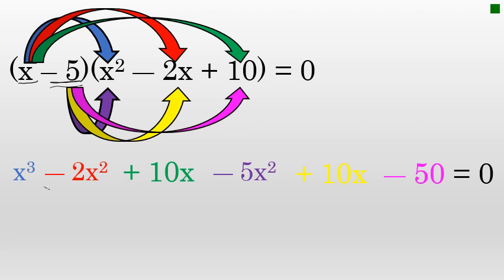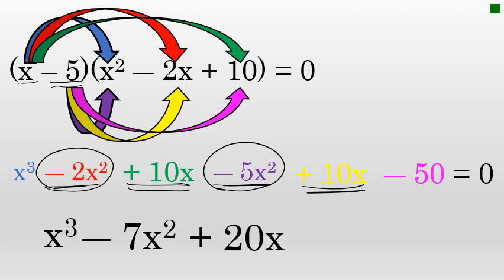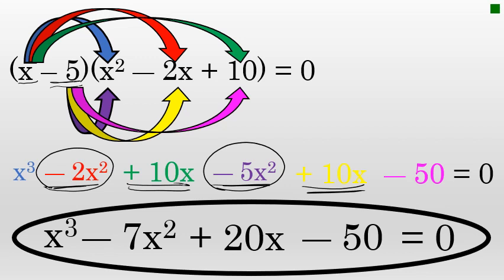Let's combine like terms. Negative 2x² and negative 5x² combine to give negative 7x². Positive 10x and positive 10x combine to give 20x. The final answer in polynomial form is x³ minus 7x² plus 20x minus 50 equals zero. This cubic equation has roots 5, 1 plus 3i, and 1 minus 3i.